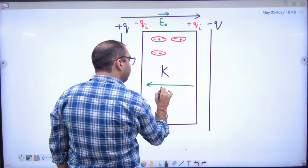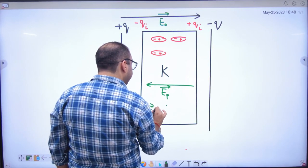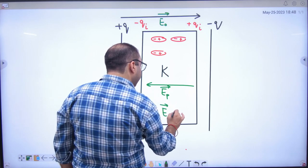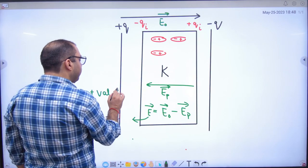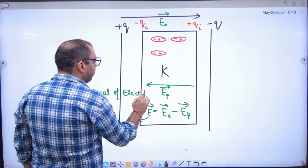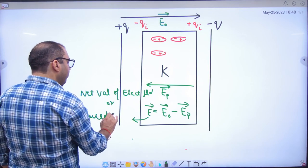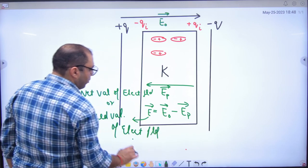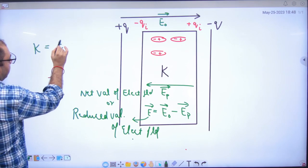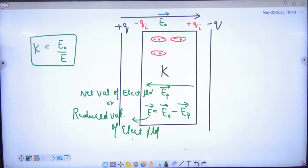Net electric field E vector is equal to E₀ vector minus Eₚ vector, or it is called net value of electric field, or then another name was called reduced value of electric field. And what was the dielectric constant? E₀ divided by this reduced value, and if we divide it, then you have what is dielectric constant? Is there any doubt? Clear here?